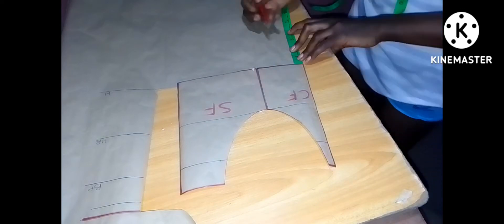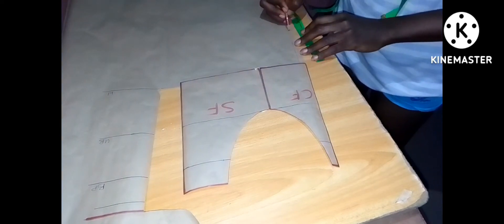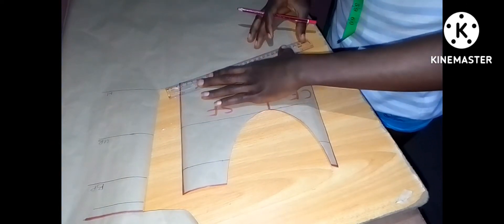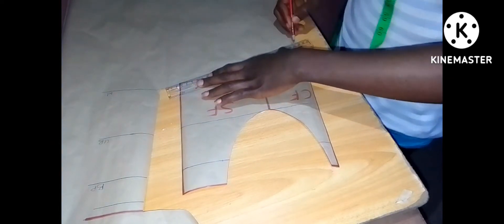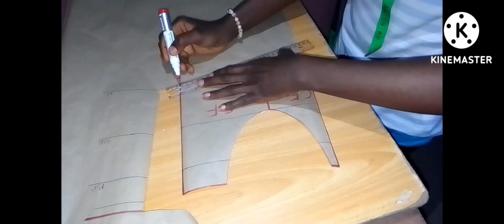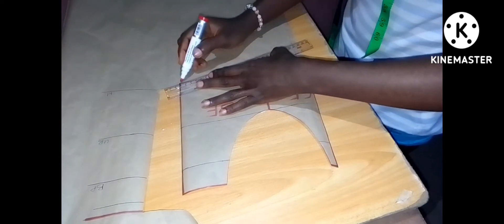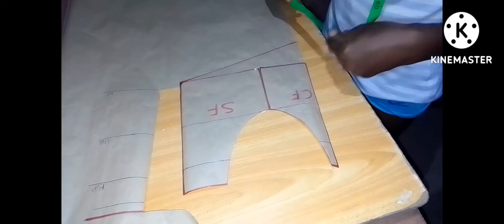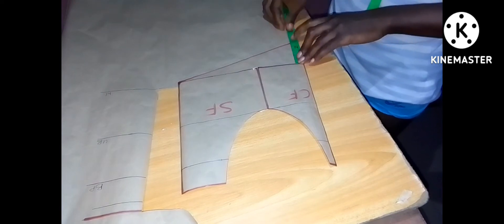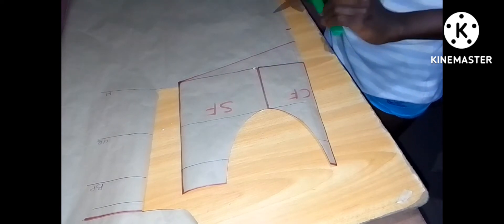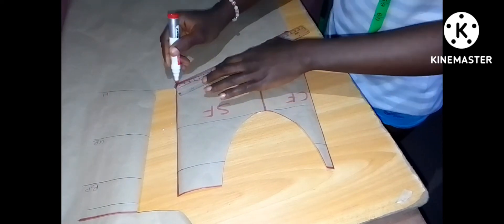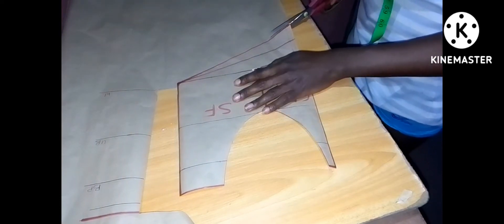Now by the center front, take down the depth of your basque effect. I want it to be 4 inches, so you could still choose however deep you want your basque effect to be. So I took 4 inches down and then connect it straight to the other end of that pattern. Here I made a mistake, it's supposed to be 4 but I didn't get up to 4 so I'm correcting it now. This is my 4 inches and I'm joining it back to where it's supposed to be. So now my basque effect is ready, so I'll just cut it out.